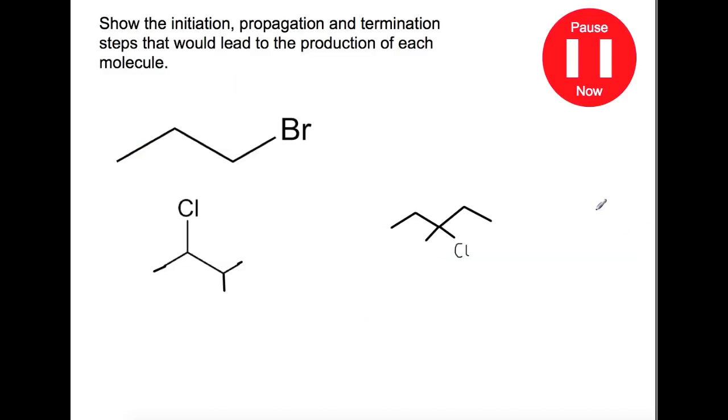For each of these molecules show an initiation, propagation and termination step that would allow you to produce the molecule. So looking first of all at 1-bromopropane, the initiation step that you would have to use would need to involve bromine and would be using UV light to form two bromine radicals.